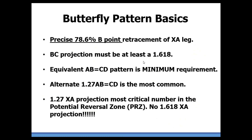In the Butterfly, the precise .786 B-point is what defines the structure. We also look at other measurements like the BC projection and an equivalent AB equals CD pattern — that's a minimum requirement. Sometimes we see an alternate 1.27 ABCD, as that's the most common in this structure, but typically we're going to see one of those two variations.